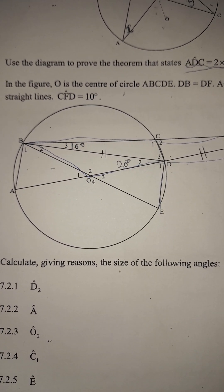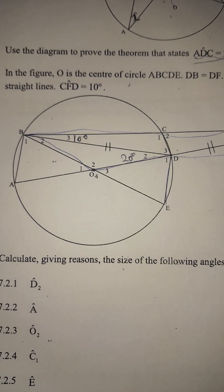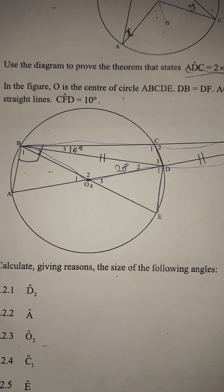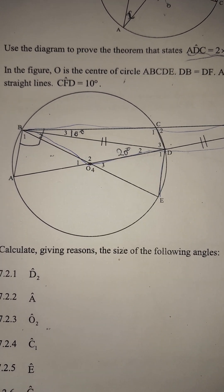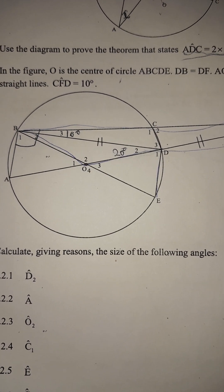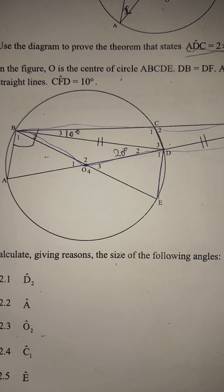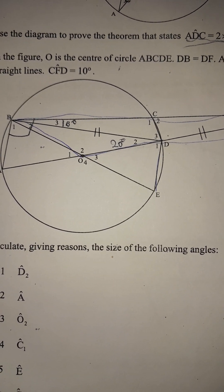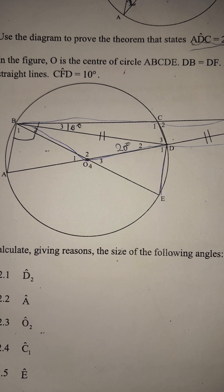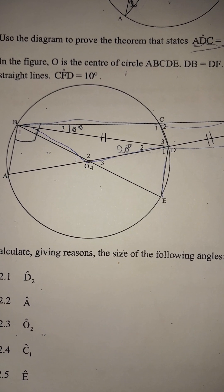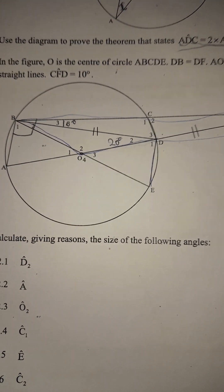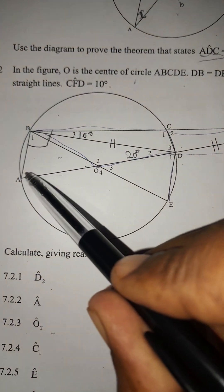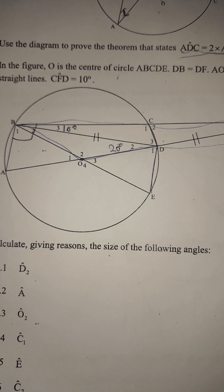We can see there is a diameter, so there will be 90 degrees at that point — angle in a semicircle. We have a cyclic quad ABCDE, and BACD is also a cyclic quad.